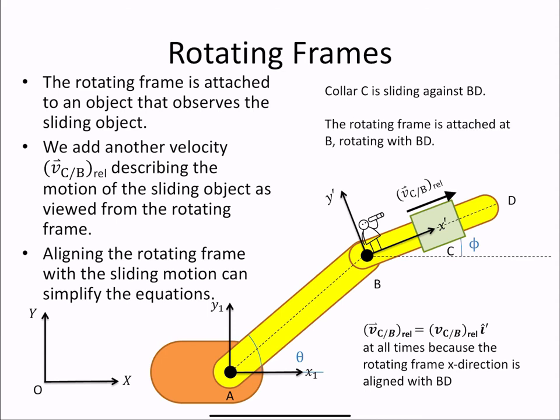Often, aligning the rotating frame with the sliding motion can simplify your equations. So our vector vC with respect to B relative is always going to be in the i hat prime direction because of that orientation of the rotating frame along the direction of motion of our collar C.